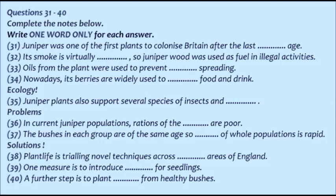Turning now to ecological issues, juniper bushes play an important role in supporting other living things. If juniper bushes are wiped out, this would radically affect many different insect and also fungus species. We simply cannot afford to let this species die out. A survey conducted in the north and west of Britain in 2004-5 showed that a major problem is the fact that in present-day populations, ratios between the sexes are unbalanced, and without a proper mix of male and female, bushes don't get pollinated. Also, the survey found that in a lot of these populations, the plants are the same age, so bushes grow old and start to die at similar times, leading to swift extinction of whole populations.